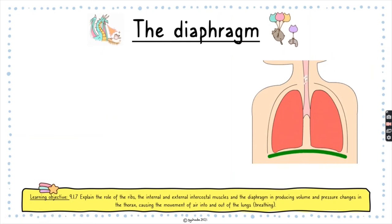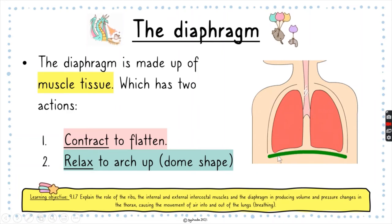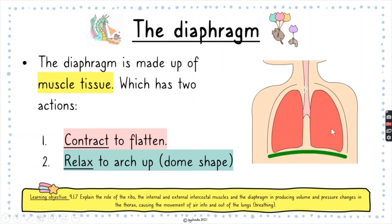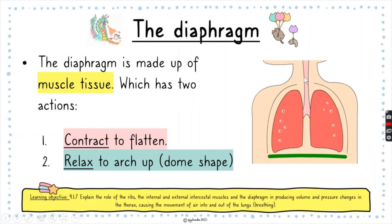The diaphragm is also a muscle made of muscle tissue, and it has two main actions. During contraction, it shortens and becomes flatter. During relaxation, it returns to a dome shape. This ability to flatten and dome helps control the volume of the thoracic cavity and, in turn, controls the pressure.